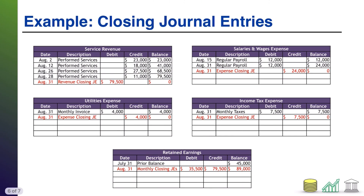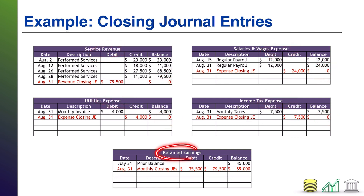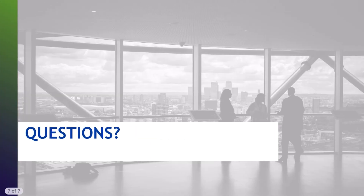When we go back to our ledgers, this is what they now look like. Revenue: zero. Expense: zero. Expense: zero. Expense: zero. Retained earnings, because we credited it and debited it, has now increased — in this example by $44,000, which is net income. Revenue minus expenses gives us net income of $44,000. That's it for closing entries. Hopefully you found this helpful, and I hope you join me for another video. Thank you.